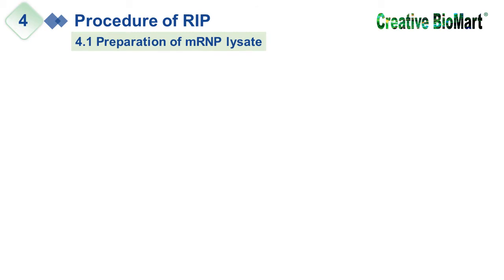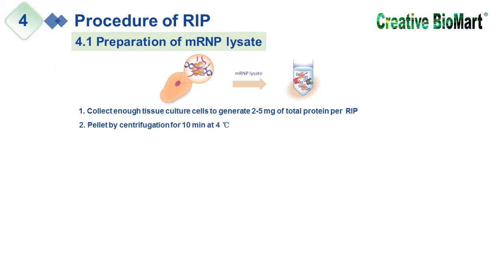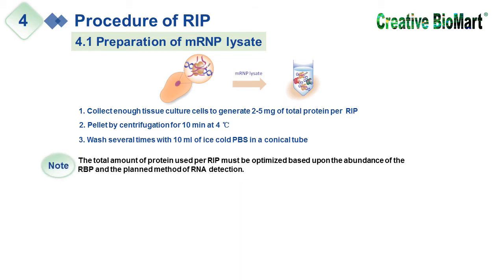Step 4.1 Preparation of mRNP lysate. First, collect enough tissue culture cells to generate total protein. Second, pellet by centrifugation for 10 minutes at 4°C. Third, wash several times with ice-cold phosphate-buffered saline (PBS) in a conical tube. Note: the total amount of protein used per RIP must be optimized based upon the abundance of the RNA-binding protein being investigated and the planned method of RNA detection.